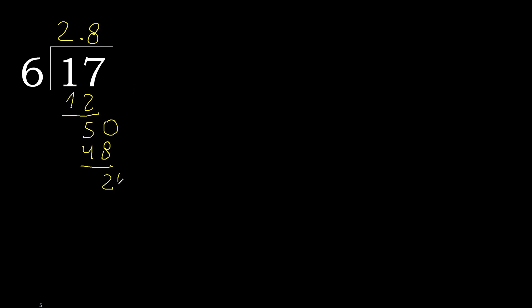Next. There is no next digit, therefore complete — always complete with 0. 20. 6 multiplied by 4 is 24, which is greater. 6 multiplied by 3 is 18. 18 is not greater. Subtract.